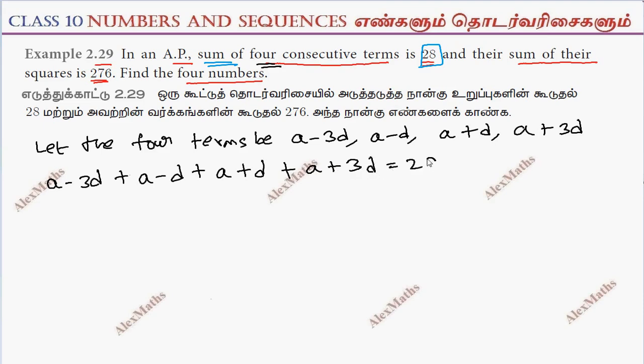The minus 3d plus 3d cancel, minus d plus d cancel. Total is 4a. This is 28, so 4a equals 28, therefore a equals 7.